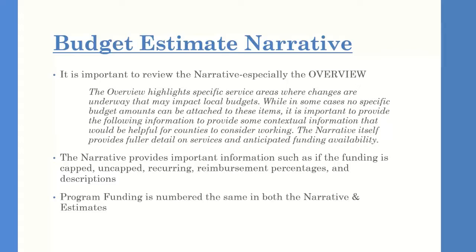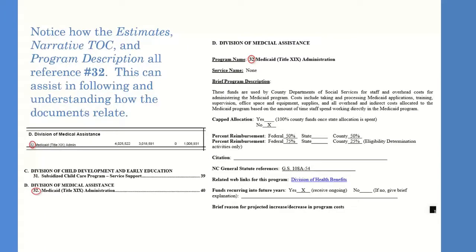For example, Medicaid is number 32 in the narratives, and that same number 32 appears on your budget estimates. If you are new to DSS budget and want a better understanding of each funding stream, reviewing the budget narratives is very helpful. They show whether funding is capped, your percent of reimbursement, and other important details to familiarize yourself with as you become more knowledgeable about DSS budgeting.